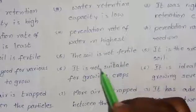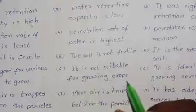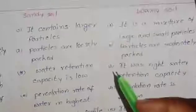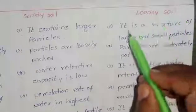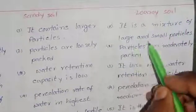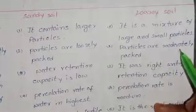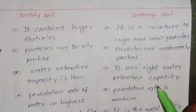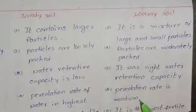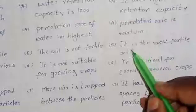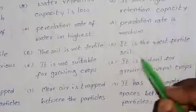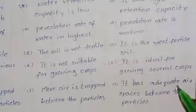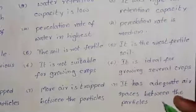Sandy soil is not fertile and not suitable for growing crops. More air is trapped between the particles. Loamy soil: it is a mixture of large and small particles, particles are moderately packed, water retention capacity and percolation rate are medium. It is the most fertile soil, ideal for growing several crops, and has adequate air spaces between the particles.